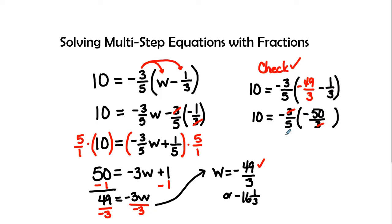And negative and a negative is a positive. And then 5 goes into 5 one time. 5 goes into 50 10 times. And so then I can see that this equals positive 10. And this checks out.